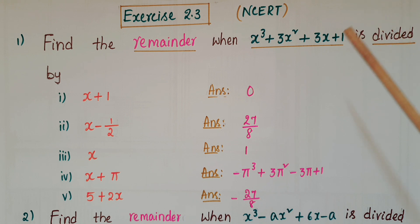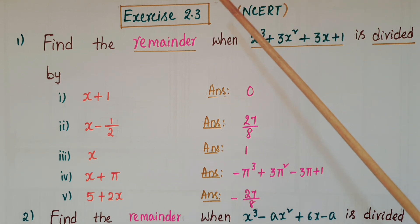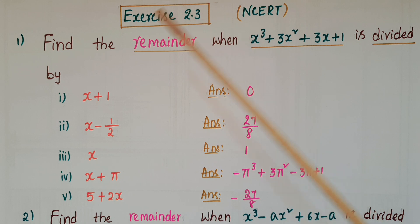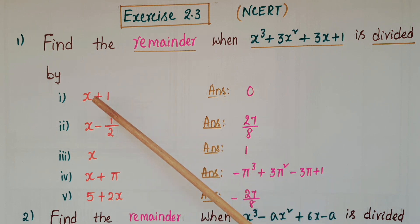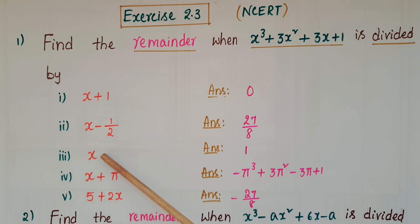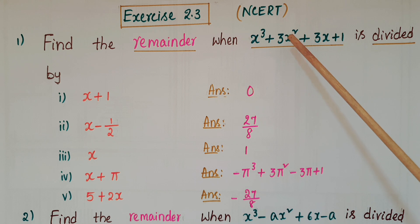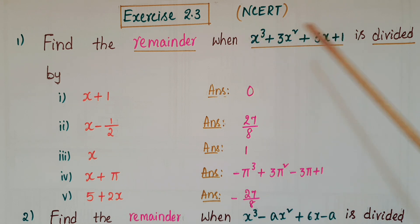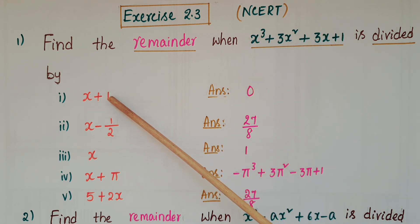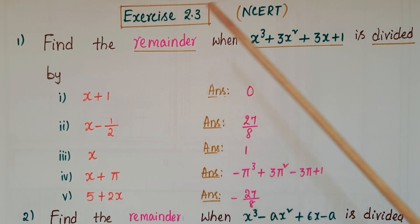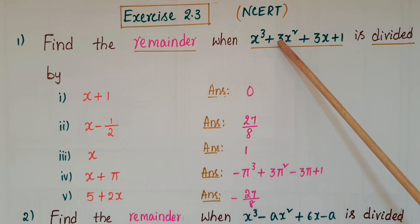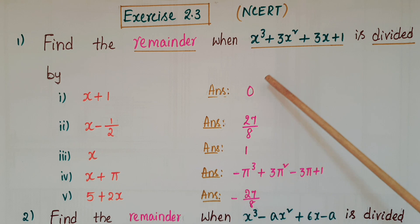Now do these problems using the Remainder Theorem. This is Exercise 2.3 from NCERT. First problem: find the remainder when x³ + 3x² + 3x + 1 is divided by (i) x + 1, (ii) x - 1/2, (iii) x, (iv) x + π, and (v) 5 + 2x. Here p(x) = x³ + 3x² + 3x + 1. Make each f(x) = 0 to find the x values, then substitute into p(x) to get the answers.